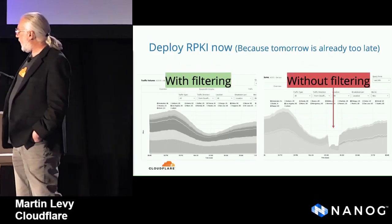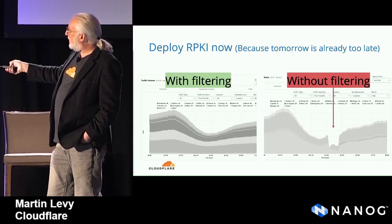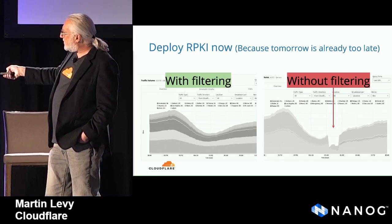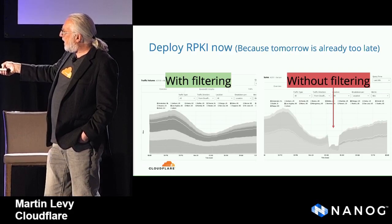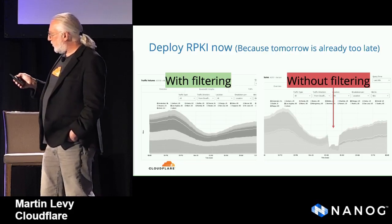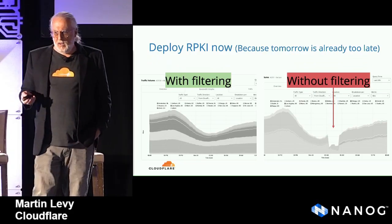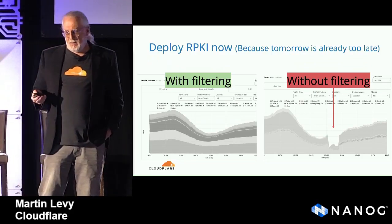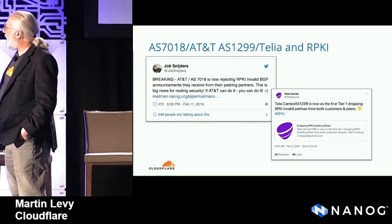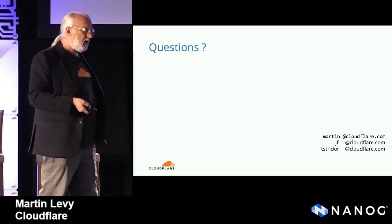I'm going to talk about this slide very quickly and then be quiet. This is what happened to a particular eyeball network that didn't do filtering — bits disappeared for a period of time. Here is a network that does do RPKI filtering and peer lock filtering, and nothing happened to them. We at least had a couple of eyeball networks to compare to see the difference. That's simply a rah-rah RPKI summary, and I'm sure I'm going to get a bunch of questions.